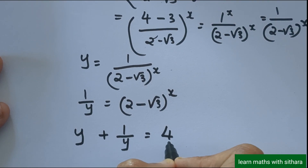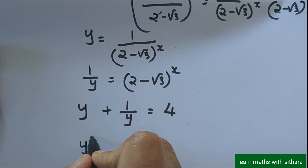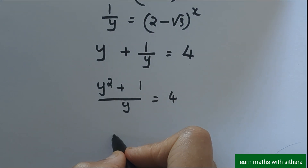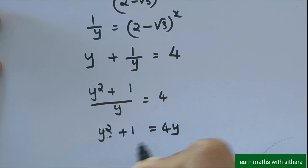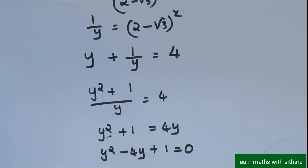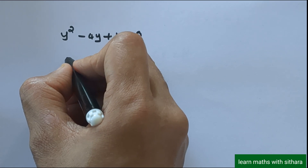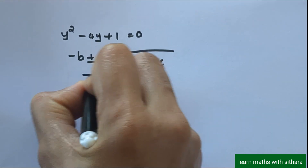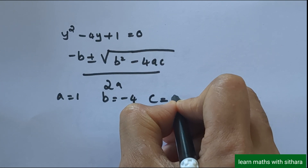So y + 1/y = 4, which gives y² + 1 = 4y, or y² − 4y + 1 = 0. Now we have to solve this quadratic equation to find the value of y. Using the quadratic formula: (−b ± √(b² − 4ac)) / 2a, where a = 1, b = −4, and c = 1.